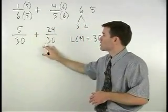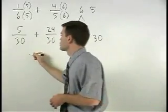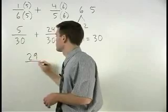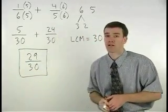Five over thirty plus twenty-four over thirty is twenty-nine over thirty, which is our final answer.